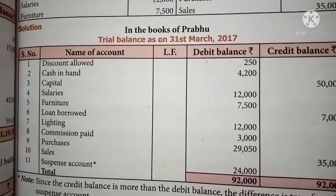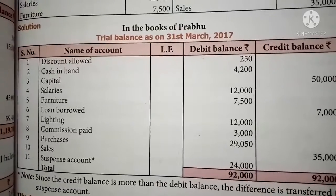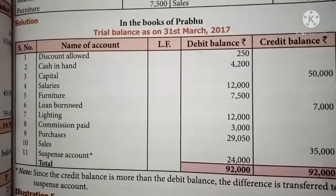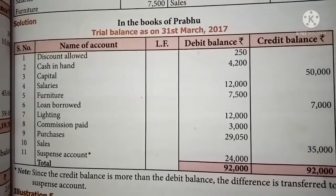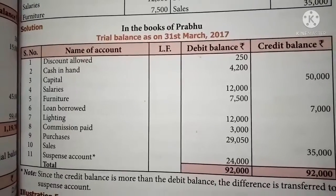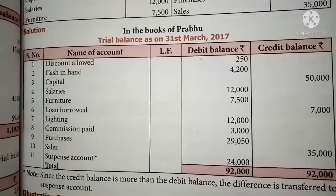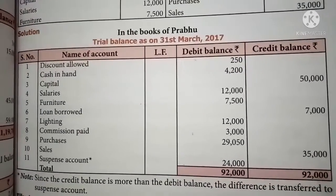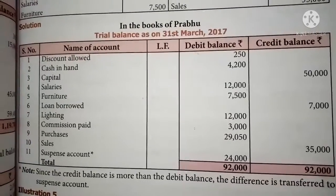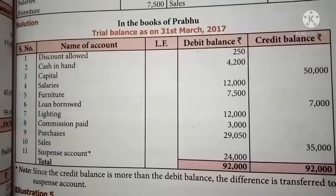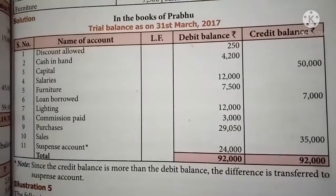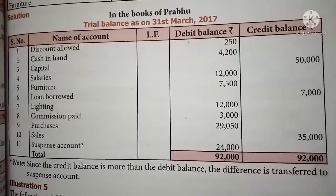After writing all the amounts in the trial balance in their respective columns, add the debit column roughly and add the credit column roughly to find the highest amount. The highest amount is in the credit column — 92,000. In the debit column the total amount is 68,000. Write the highest amount in both columns and find the difference: 92,000 minus 68,000 equals 24,000.